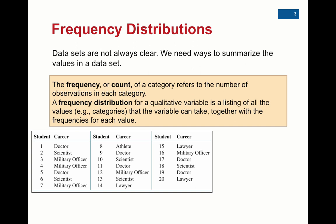So frequency distributions are first. Take a look at this set of data here. What we've done is surveyed 20 students and asked them what career they want to have. You can see the list of answers going down — the first student said doctor, the second said scientist, the third said military officer, and so on. As we can see, this data set is not very organized; this is just what we wrote down as we surveyed 20 students.